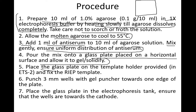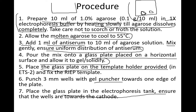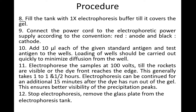Place the glass plate on the template holder provided, then punch wells with a gel puncher at the bottom of the gel for addition of antigens. Place the glass plate in the electrophoresis tank. Fill the tank with 1x electrophoresis buffer until it covers the gel.